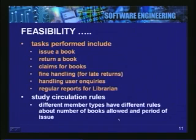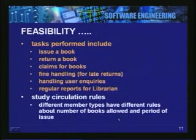We also go a little deeper into some of these functions to understand why the problems are felt. We want to study the rules for circulation. We see that we have different types of users: student users, faculty users, external users. These users have different rules about how many books they can issue, what kind of books they can be issued, and the duration of the issue. All these rules have to be clearly understood.